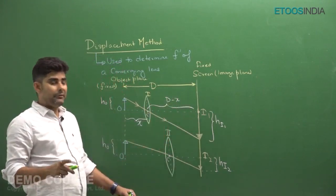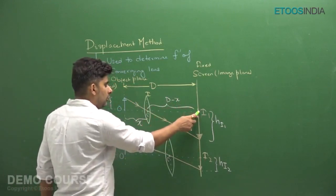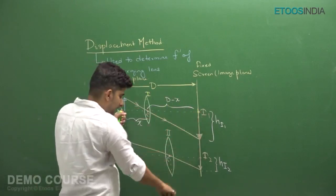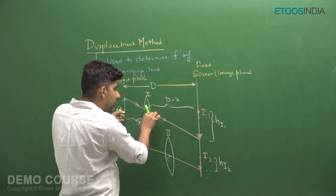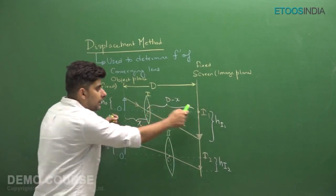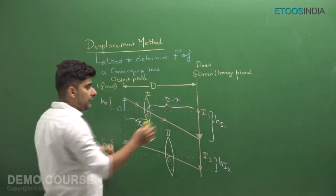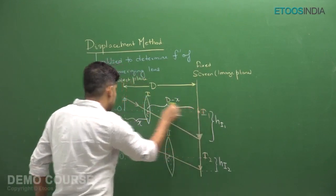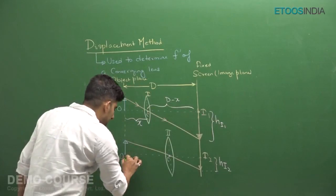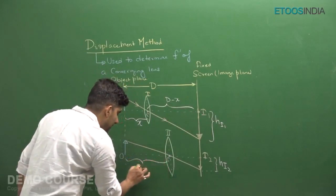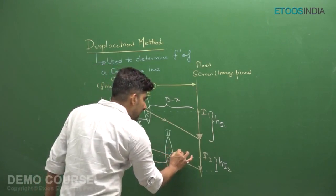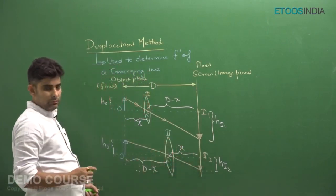By the principle of reversibility, if object is placed at one point and image is formed at another, then if the positions are interchanged, the image would form at the original object position for the same lens. That means if object distance from the lens is D minus x, the image distance would be x. So the second object distance will be D minus x and the second image distance will be x. This is what we conclude by the principle of reversibility.